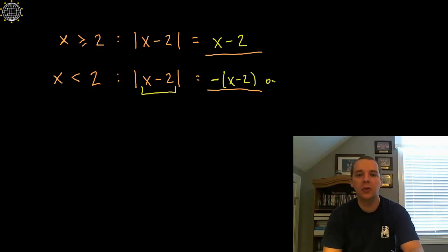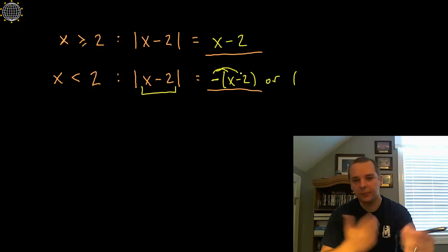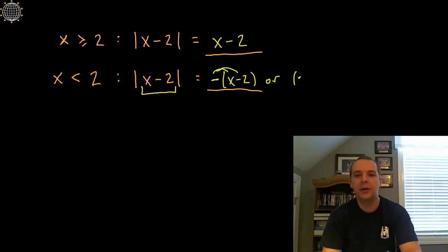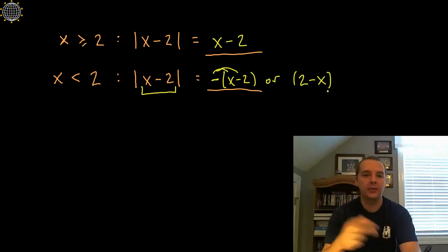So we can express it this way, or if you'd rather you can distribute that negative through. You could write this as 2 minus x as opposed to negative x minus 2 rather.